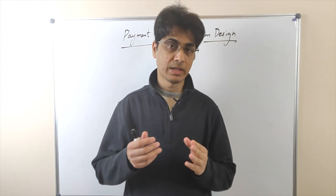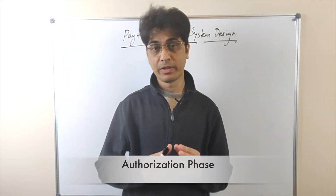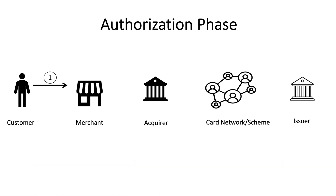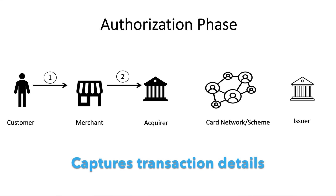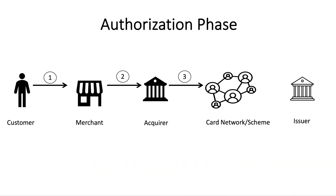When a customer provides a credit card to a merchant for a transaction, that financial transaction comprises two phases. The first phase is the authorization phase. A cardholder begins a credit card transaction by presenting their card to a merchant as payment for goods or services. The merchant uses their credit card machine, software, or gateway to transmit the cardholder information and transaction details to their acquiring bank or processor. The acquiring bank captures the transaction, performs basic validation, and routes it through the appropriate card network to the cardholder's issuing bank for approval.